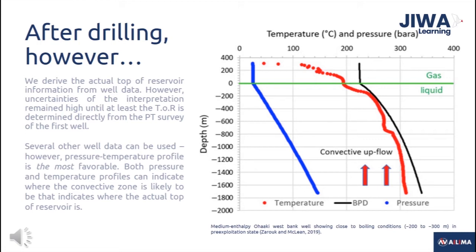The pressure-temperature static data is derived during drilling of wells, specifically during heating up post-drilling, using temperature and pressure logging tools. The data is monitored over a period of time to understand the natural thermal state of the reservoir. The temperature profile indicates the convective zone by the linear temperature, while the pressure profile is capable of showing the convective zone by the increase in pressure. The high pressure shows the recharge zone or upflow zone, and together they indicate the Top of Reservoir within a well.